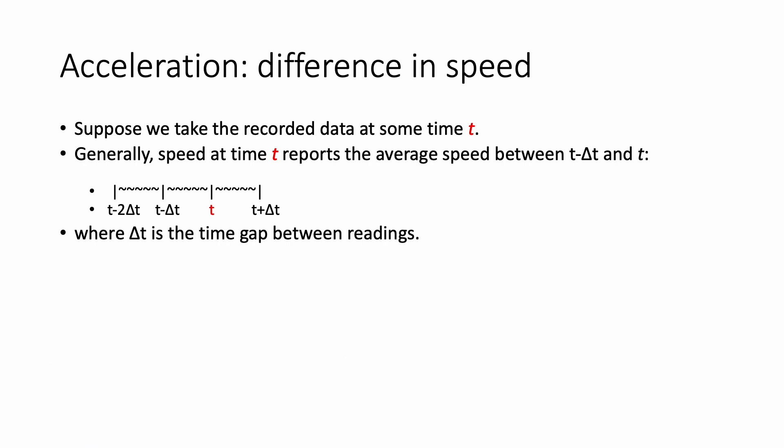At time t, we get the average velocity between t minus delta t and t — that's v of t. Similarly, moving forward one position to t plus delta t (one second later), the velocity reported at that track point is the average velocity between t and t plus delta t.